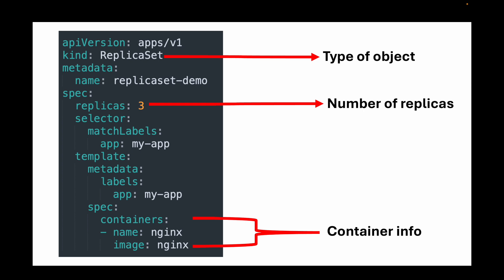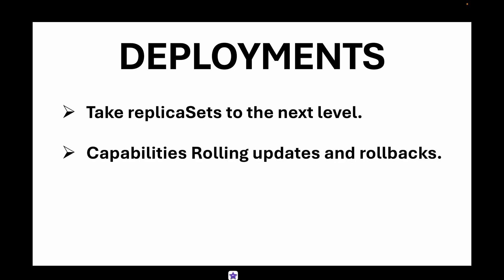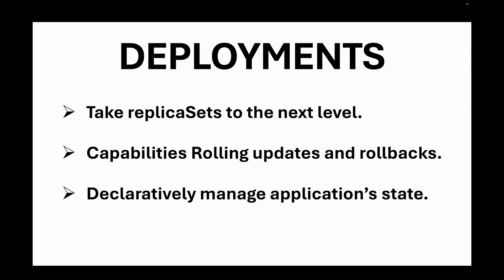Next, let's talk about deployments. Deployments take replica sets to the next level by adding management capabilities like rolling updates and rollbacks, which are not available in replica sets alone. Deployments help you declaratively manage your application's state. The main difference is that deployments also maintain the specified number of pods but additionally provide rolling updates and rollback capabilities.